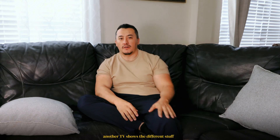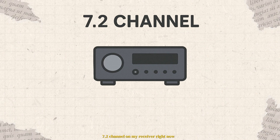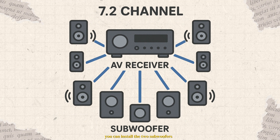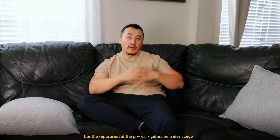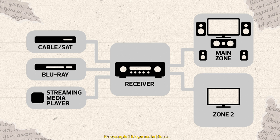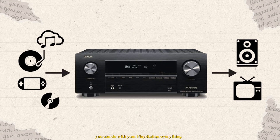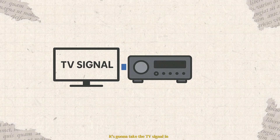The receiver receives all the combination of signals and spreads them between the outputs. Some receivers have seven HDMI inputs and two HDMI outputs for two different TVs. With the remote control you can separate the signals so one TV shows different content from the other. My receiver is 7.2 channel — you can connect two subwoofers and seven different speakers. Inside the receiver are amplifiers, but the signal routing is much wider. You can connect multiple devices: Blu-ray, CD, Bluetooth, and the receiver can stream via Bluetooth.